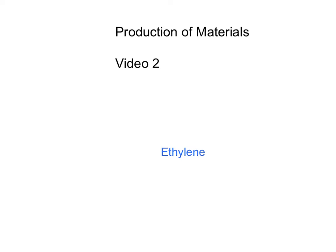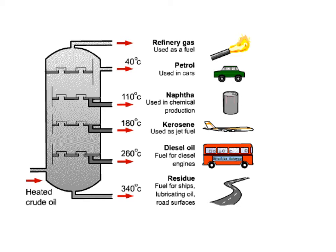This is your second video for production of materials and it's going to be on ethylene. You remember from your preliminary course fractional distillation of crude oils and that we use boiling points to separate the different parts of the crude oil and we use the different fractions for different things.